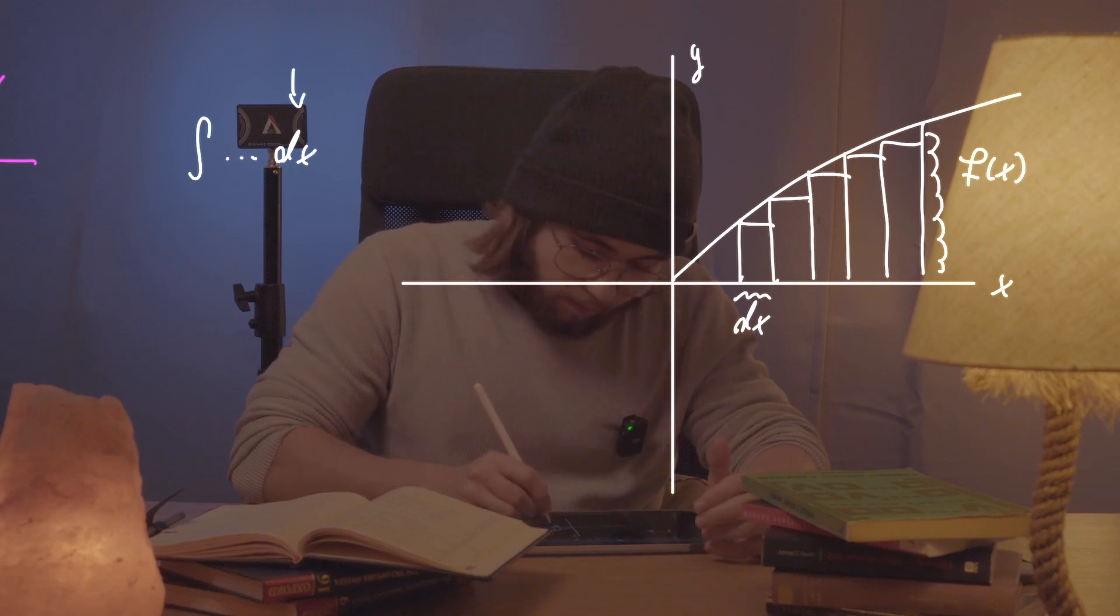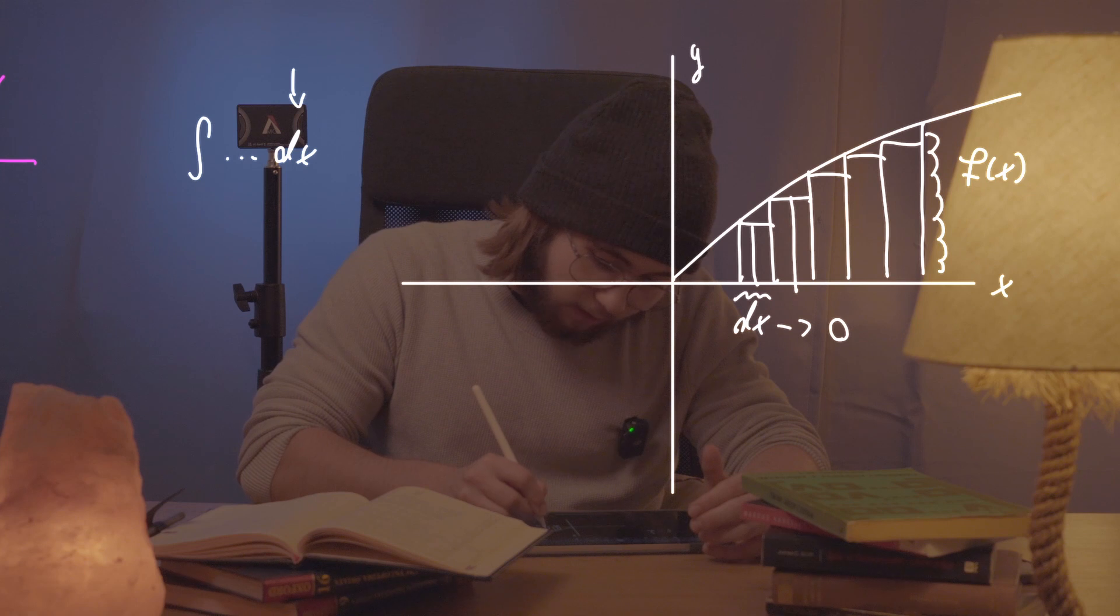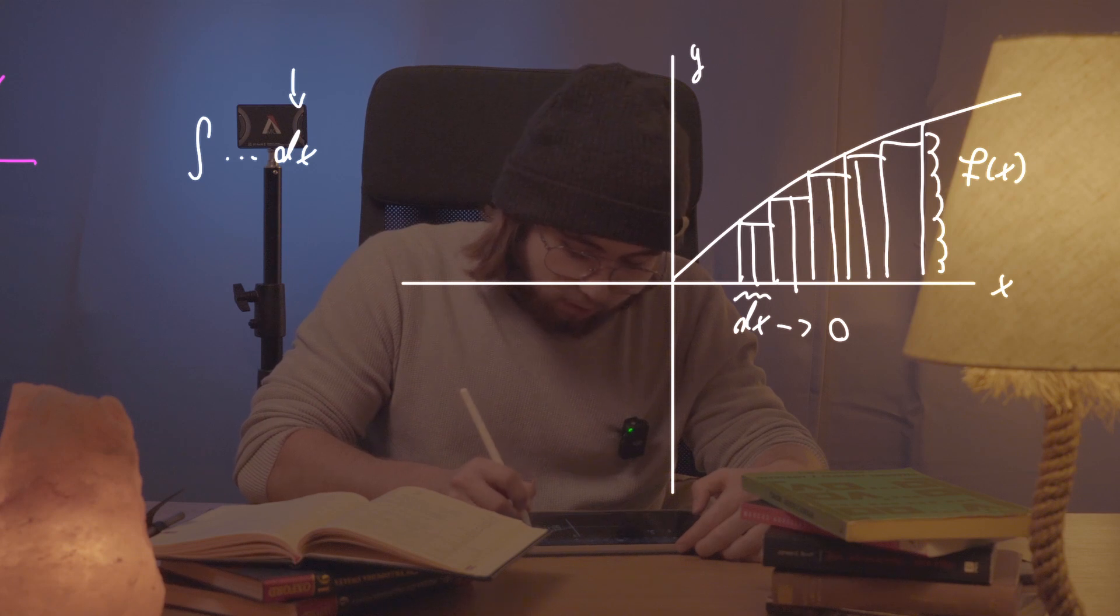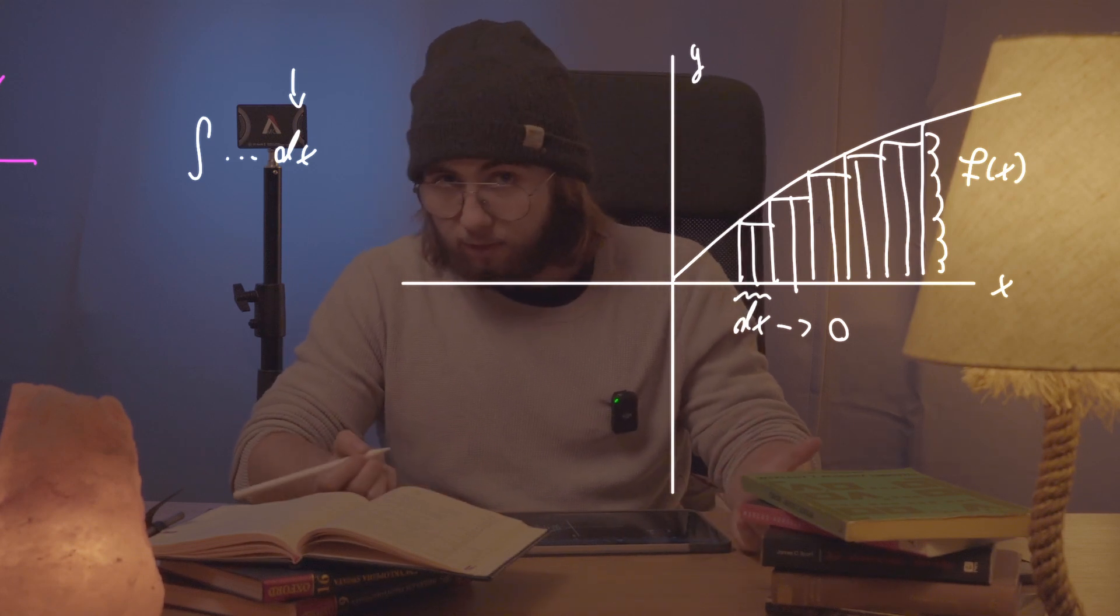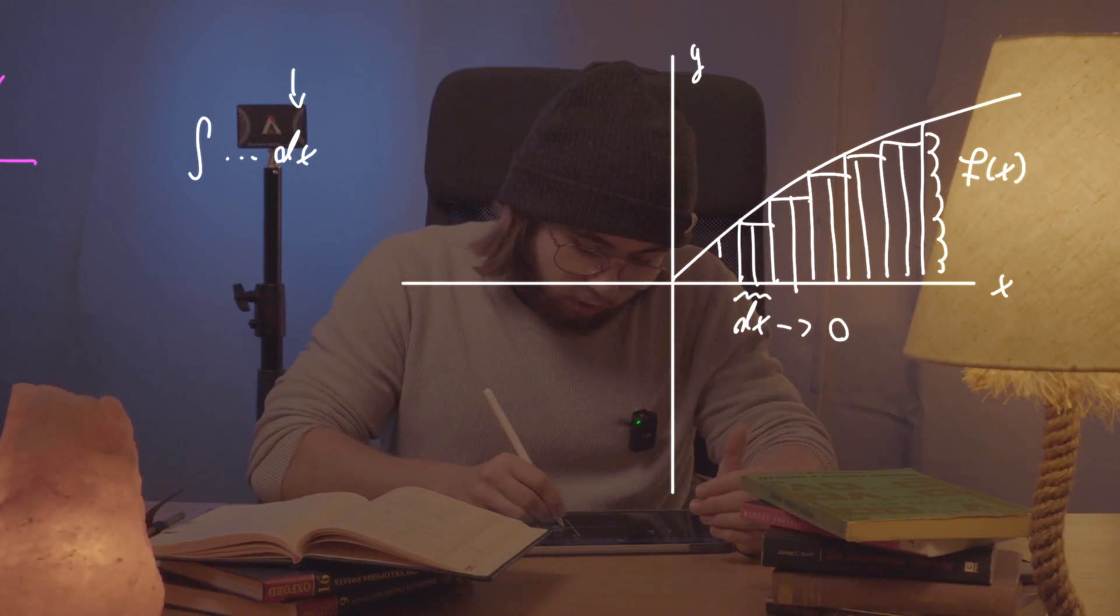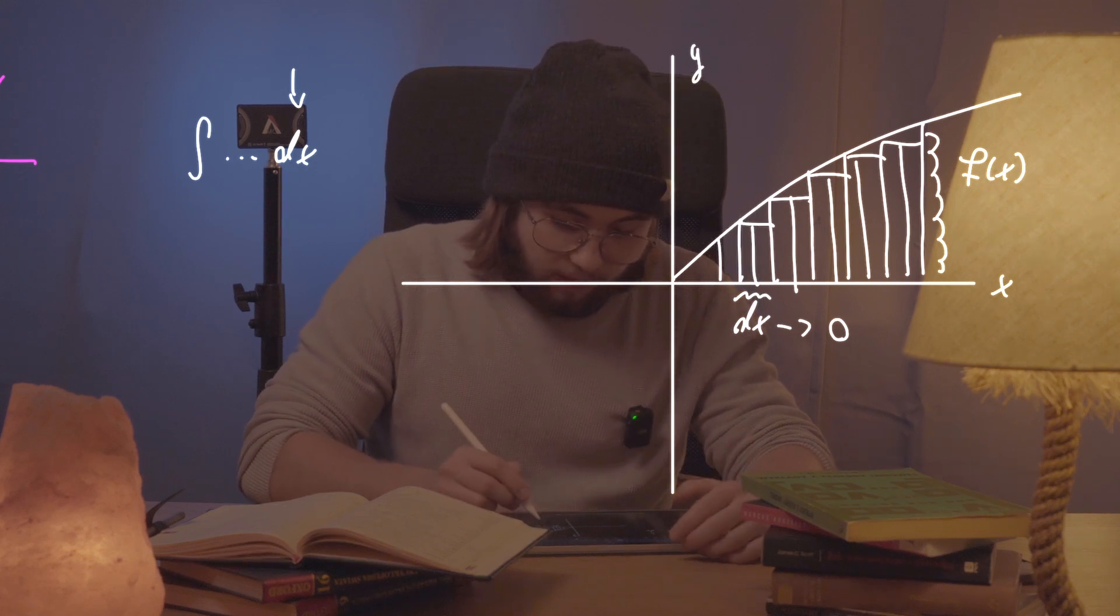And what we do then is we make the dx approach zero, so we get smaller and smaller and thinner and thinner rectangles getting better and better approximation until we get a perfect, an ideal approximation of the exact area under the curve of the function.